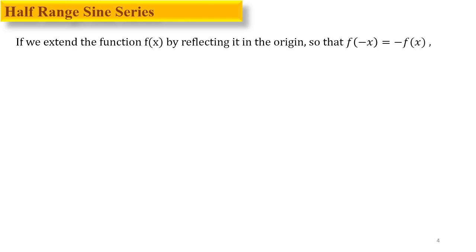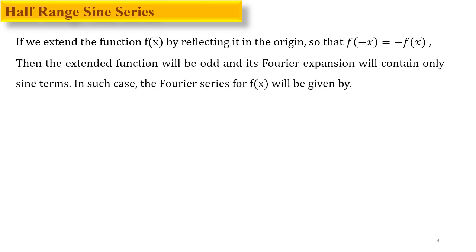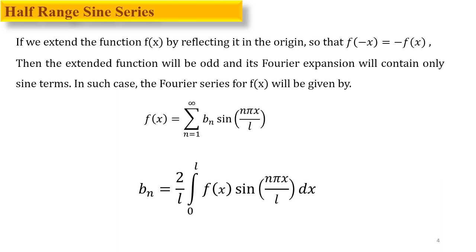Similarly, we extend f(x) by reflecting it in the origin so that f(−x) = −f(x). With this extension the function is odd, and its Fourier expansion will contain only sine terms. The Fourier series of f(x) is given as f(x) = Σ bₙ sin(nπx/L). If the function is in the first quadrant it will reflect into the third quadrant for an odd function, where bₙ = (2/L)∫₀ᴸ f(x)sin(nπx/L)dx.